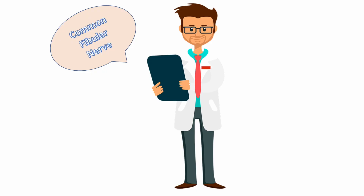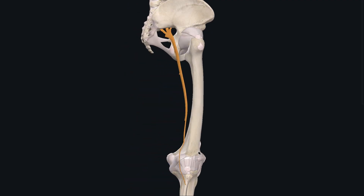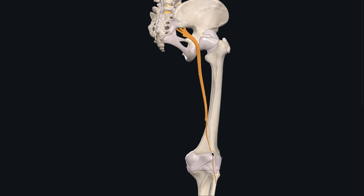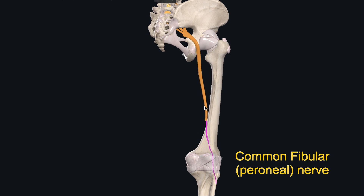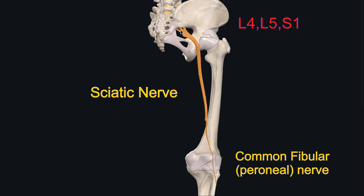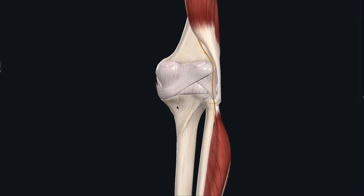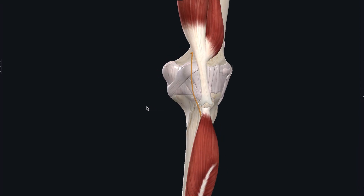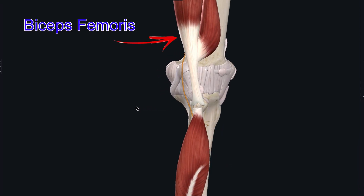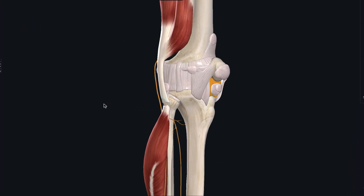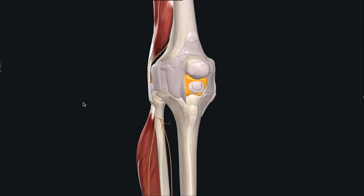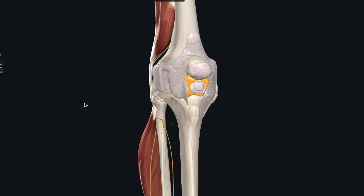The common fibular nerve is one of the terminal branches of the sciatic nerve, which bifurcates at the apex of the popliteal fossa. Its root value is L4, L5, and S1. It follows the medial border of the biceps femoris and its tendon, passes over the posterior aspects of the head of the fibula, then winds around the neck of the fibula, deep to the fibularis longus muscle, where it divides into deep and superficial fibular nerves.